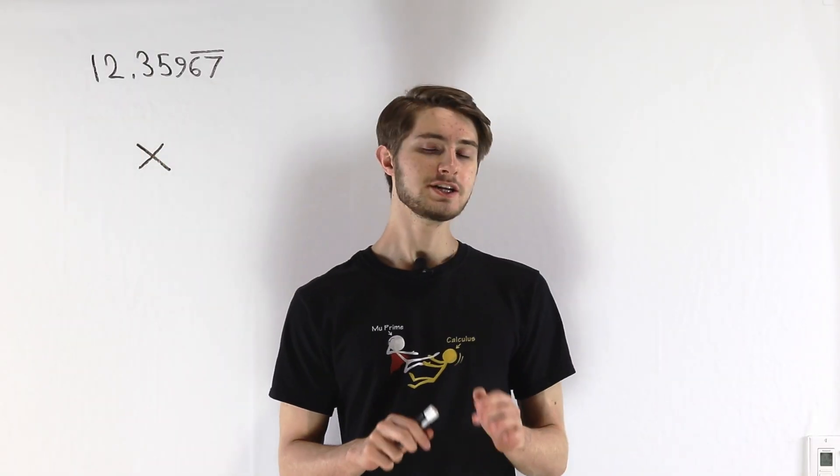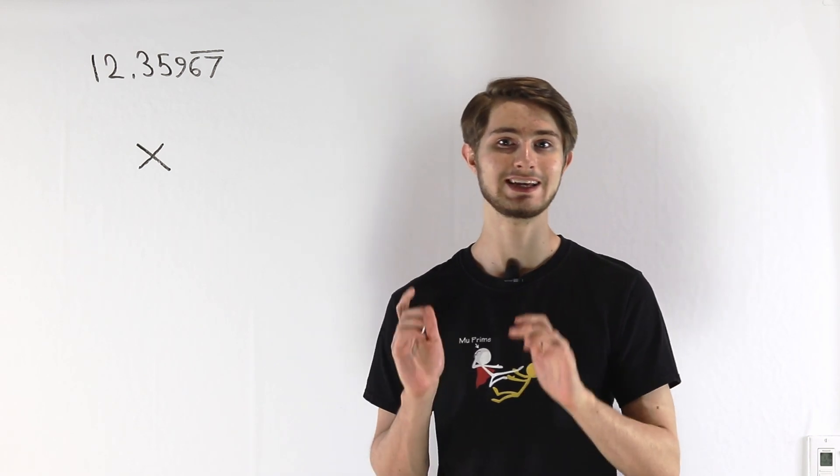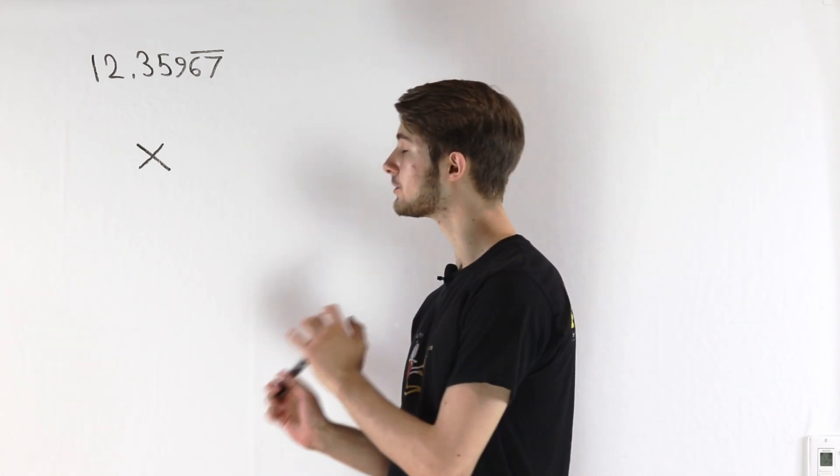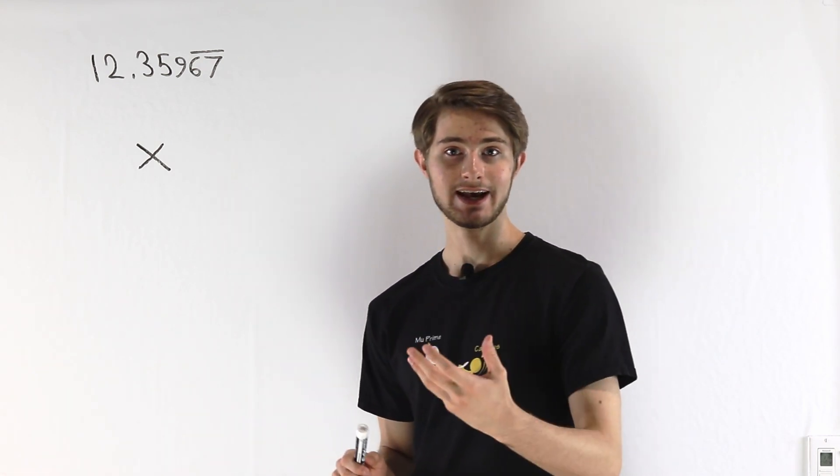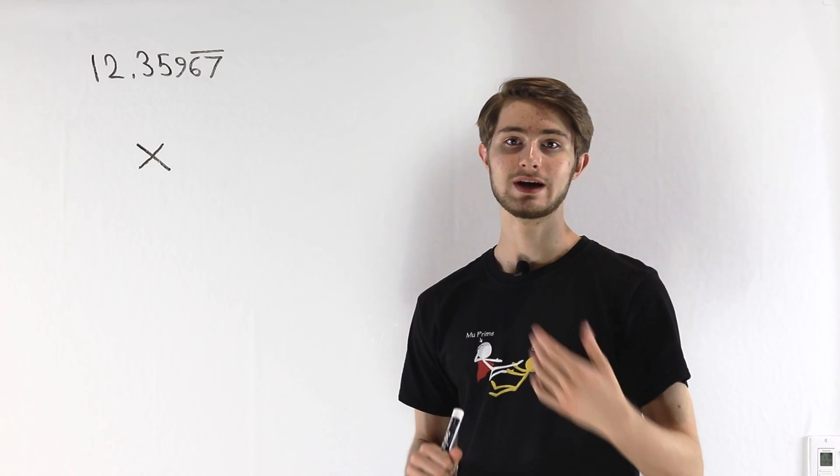We are going to prove that every number with a repeating decimal must be rational in any base. To do that, we're going to start with base 10, but we can extend the logic that we use in this proof to any base.